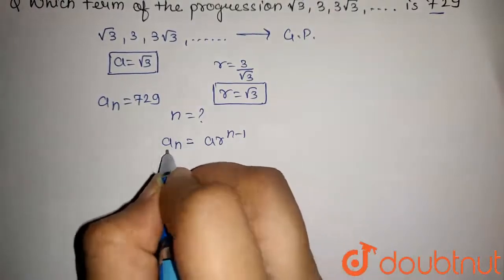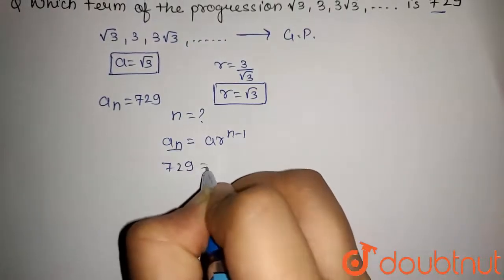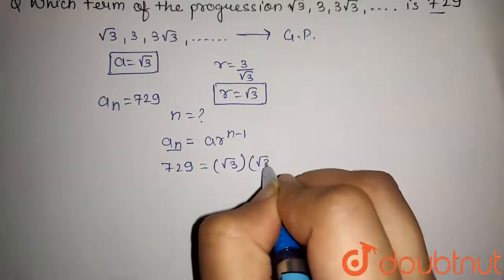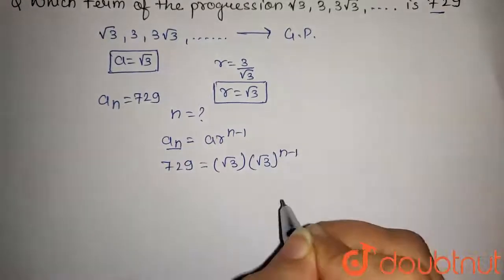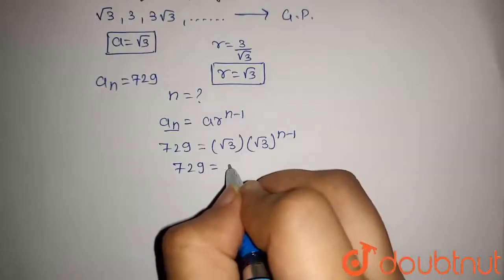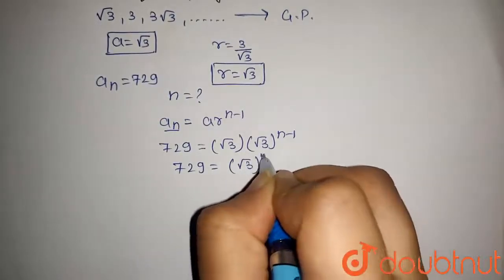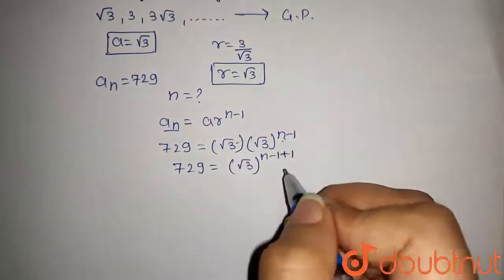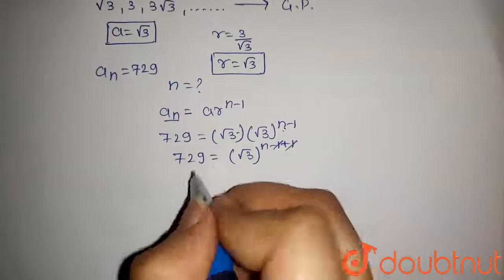729 equals √3 times (√3)^(n-1). Now, 729 will be equal to (√3)^(n-1+1). The powers will be added, so this 1 and 1 will get cancelled.